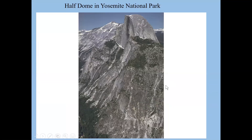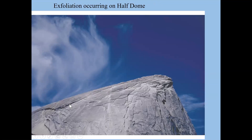Here is Half Dome in Yosemite and a close-up showing its layers. We don't know when individual layers are going to break away — that's why climbing can be dangerous. Once a layer peels away, it reduces the pressure on the layer below, which expands along weak areas and then peels away in turn. You can see these layers all the way through the rock face.